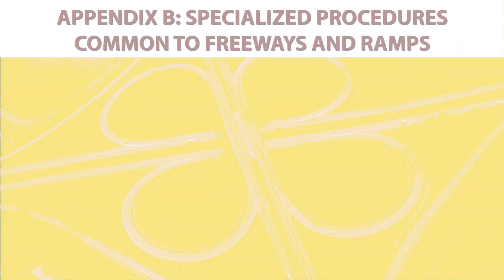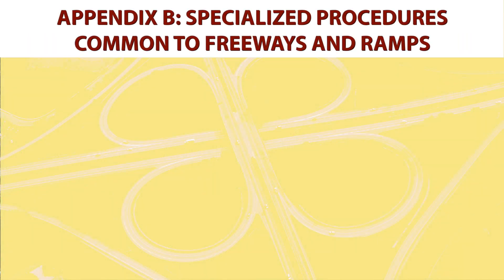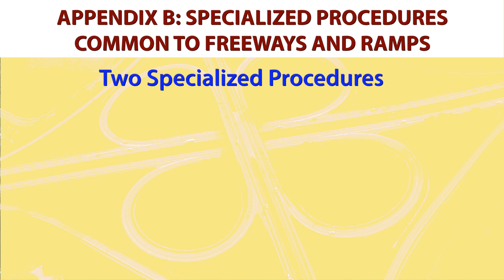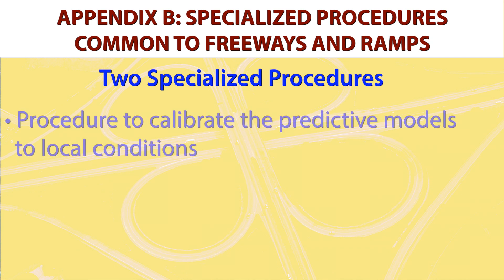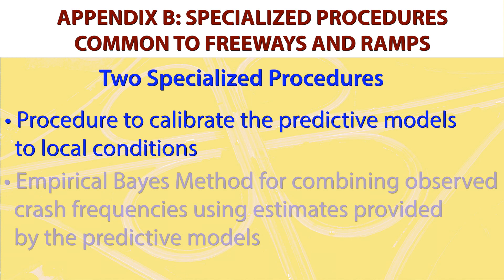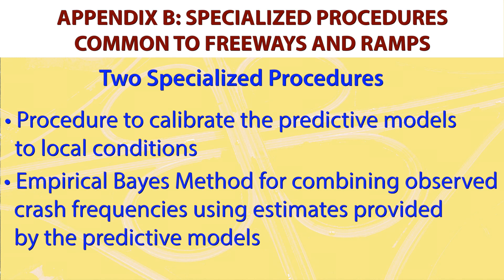Appendix B, Common to Chapters 18 and 19, describes two specialized procedures that are essential parts of the predictive methods presented for both freeways and ramps. The first procedure is used to calibrate the predictive models to local conditions. The second procedure is the empirical Bayes method for combining observed crash frequencies with the estimate provided by the predictive models.